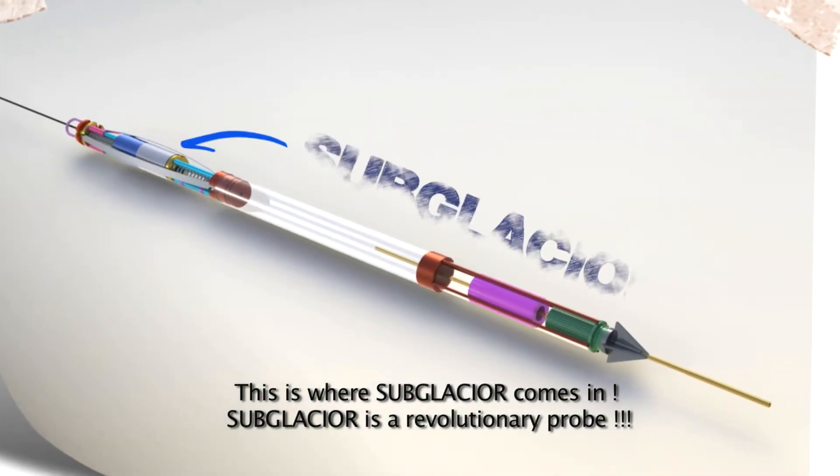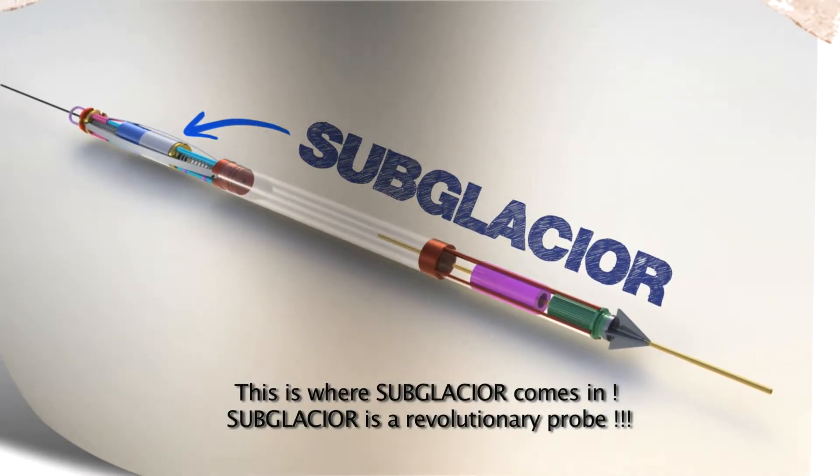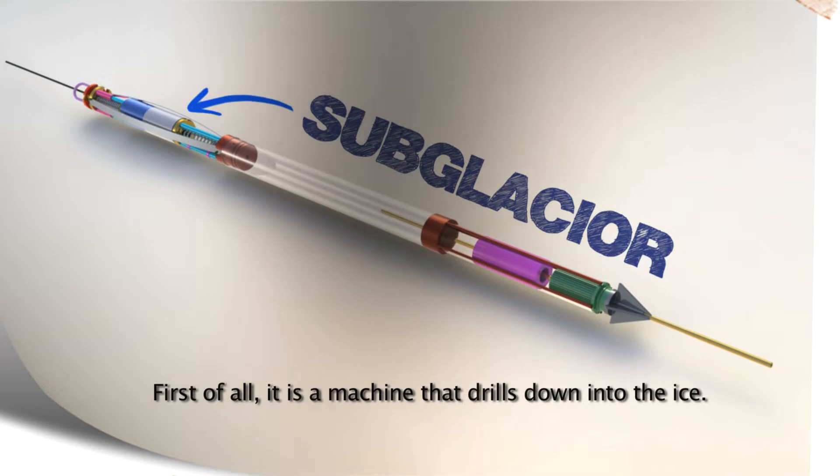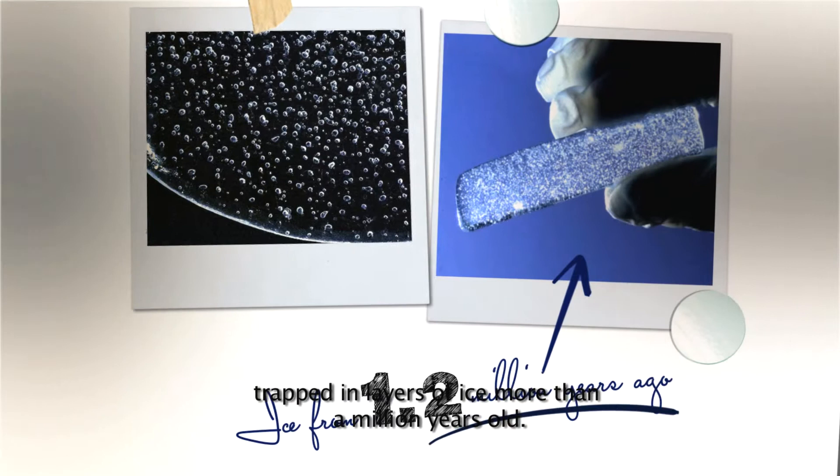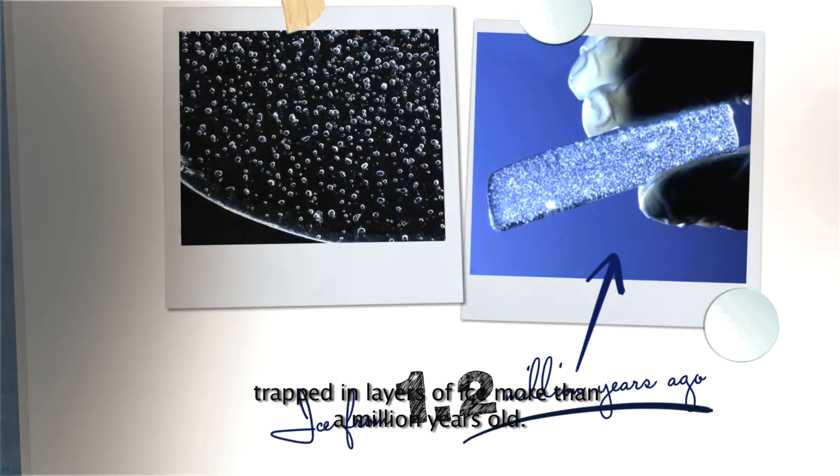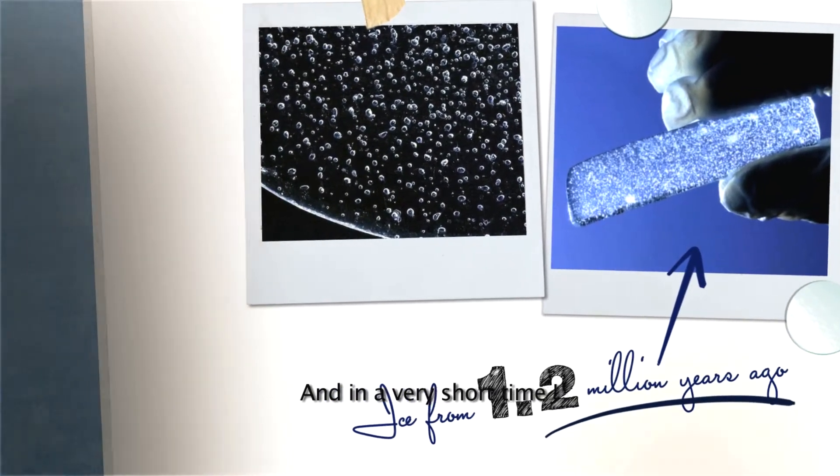This is where Subglacier comes in. Subglacier is a revolutionary probe. First of all, it is a machine that drills down into the ice. Quicker than the traditional core sampling technology, it samples the air trapped in layers of ice more than a million years old, and in a very short time.